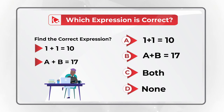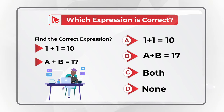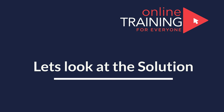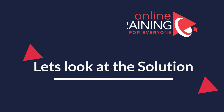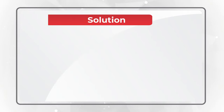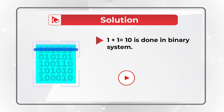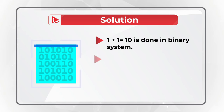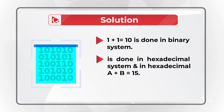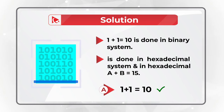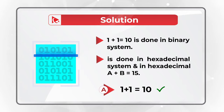Here's a quick hint: if you have a degree in computer science it might be easier for you. The trick here is that the first expression is done in the binary system, and in binary system 1 plus 1 equals 10. The second expression is done in the hexadecimal system, and in hexadecimal system A plus B equals 15. So the correct answer is choice A: 1 plus 1 equals 10.